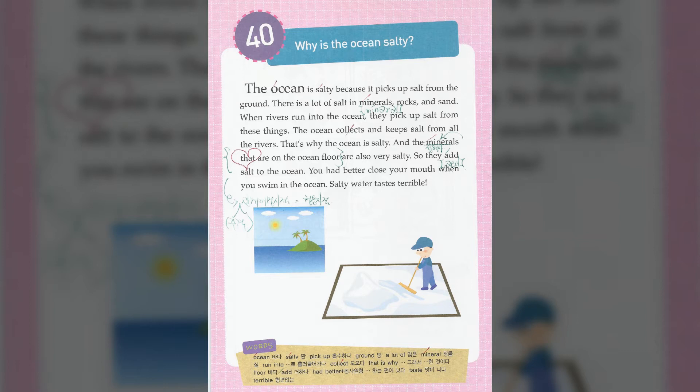When rivers run into the ocean, they pick up salt from these things. The ocean collects and keeps salt from all the rivers. That's why the ocean is salty. And the minerals that are on the ocean floor are also very salty.